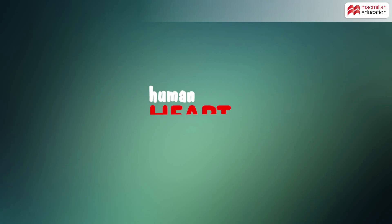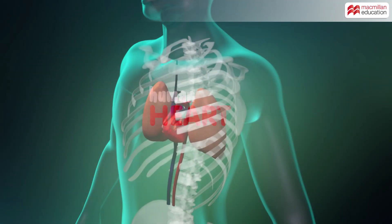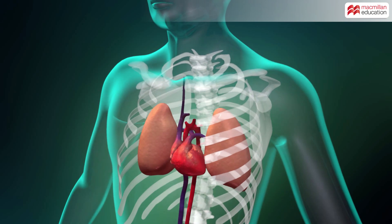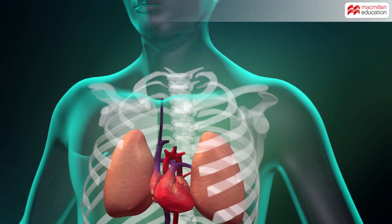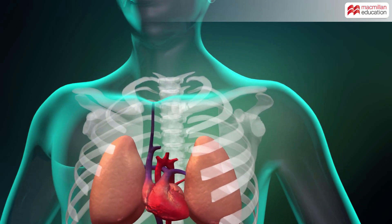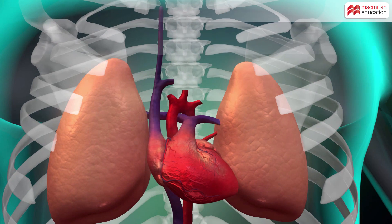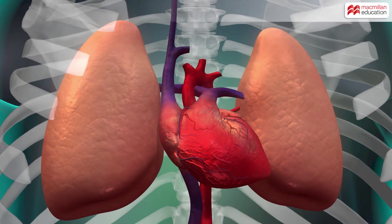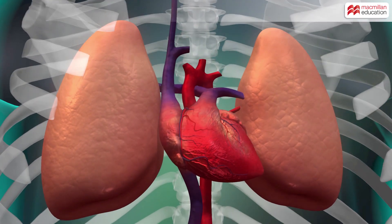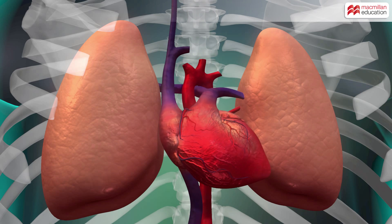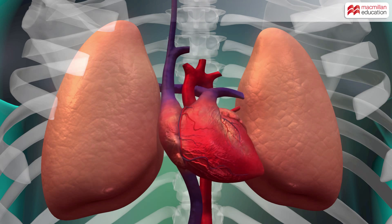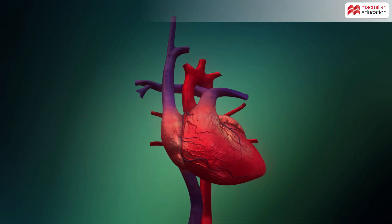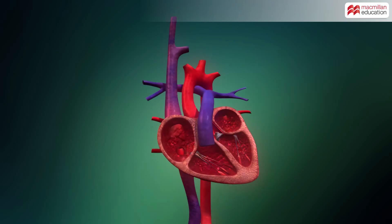The human heart is a muscular organ roughly the shape and size of a clenched fist that functions as the body's circulatory pump. It is located obliquely in the chest cavity in between the two lungs.